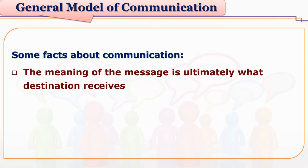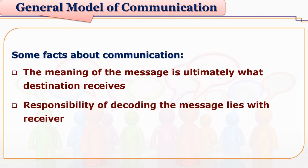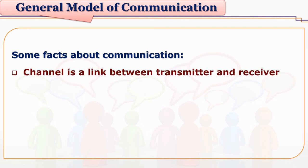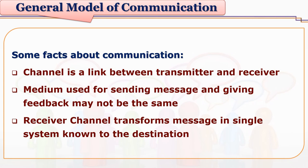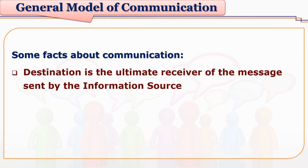The meaning of the message is not what is sent by the sender, but is ultimately what the destination receives, and there is bound to be some difference in the nature of the message because of so many channels and noise. Responsibility of decoding lies with the receiver since the sender has no immediate contact with them. Channel is a link between the transmitter and receiver. The medium used for sending a message and giving feedback may not always be the same. Receiver channel transforms the message into a signal system, but that system should be known to the destination. Destination is the ultimate receiver; the receiver only receives signals and converts them into a suitable format for the destination.